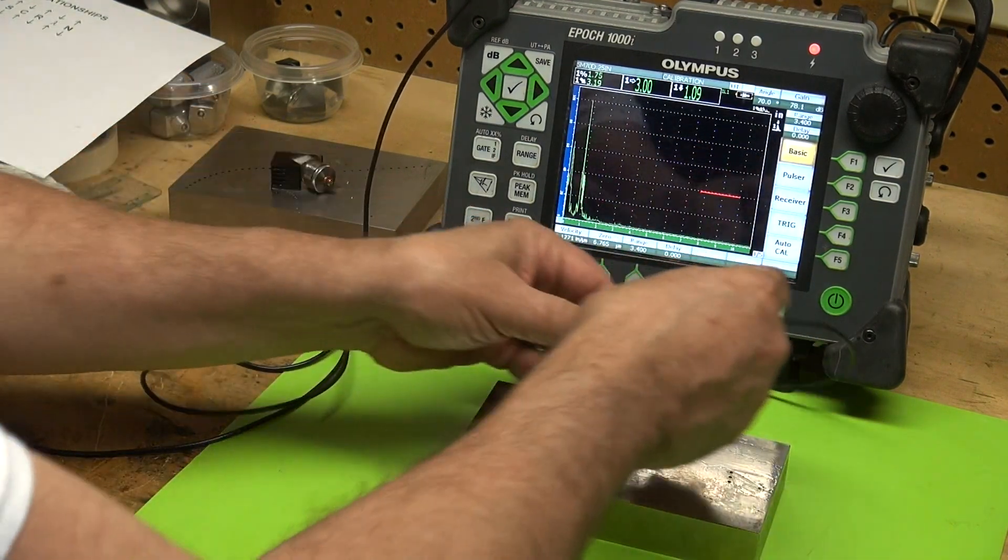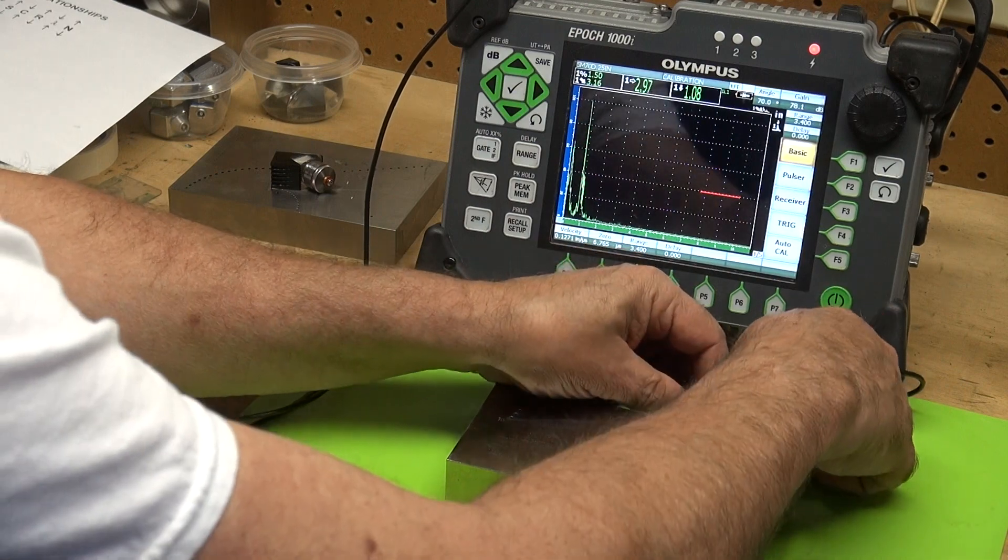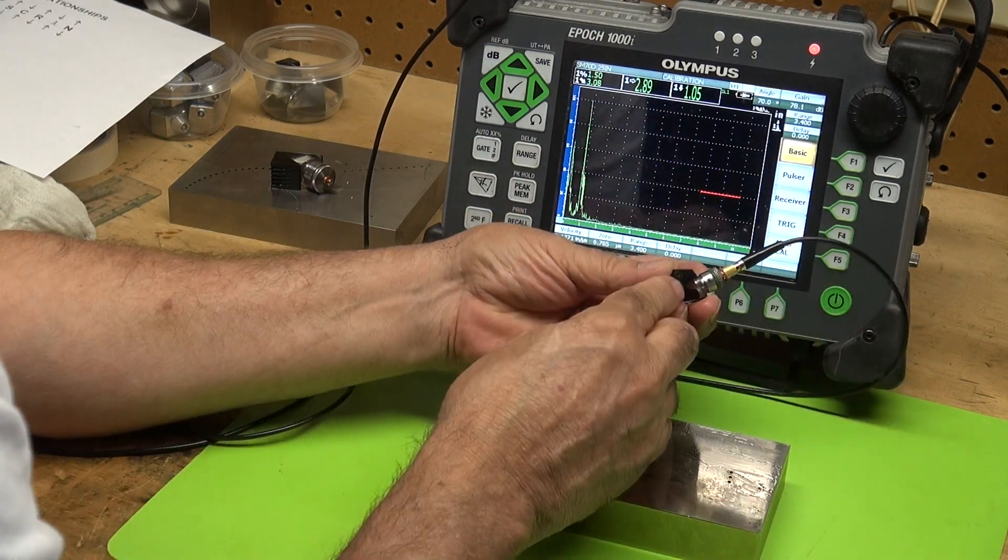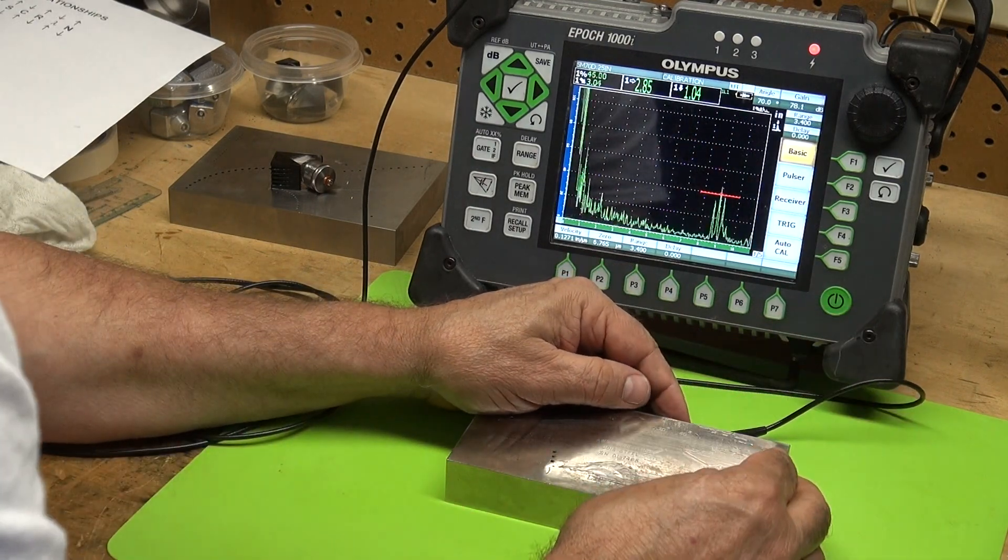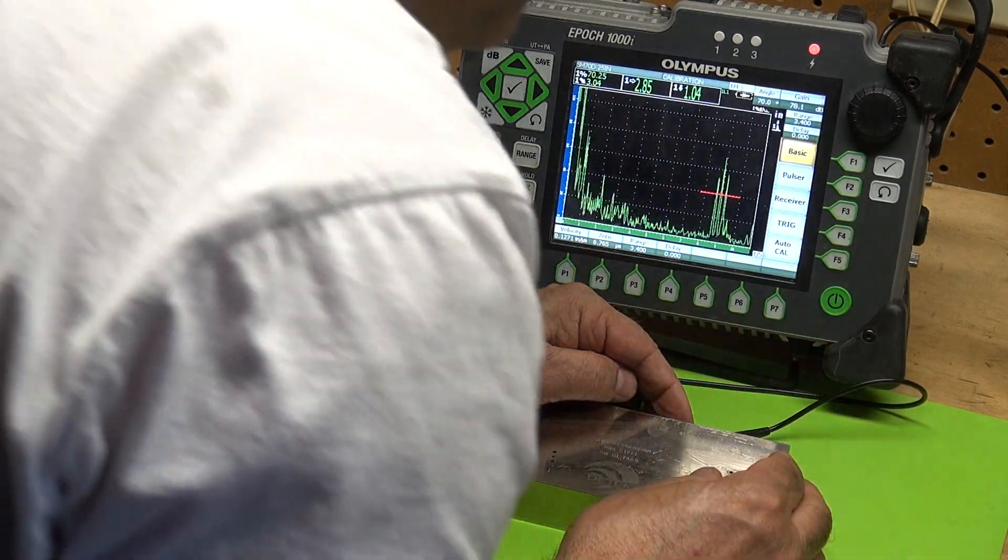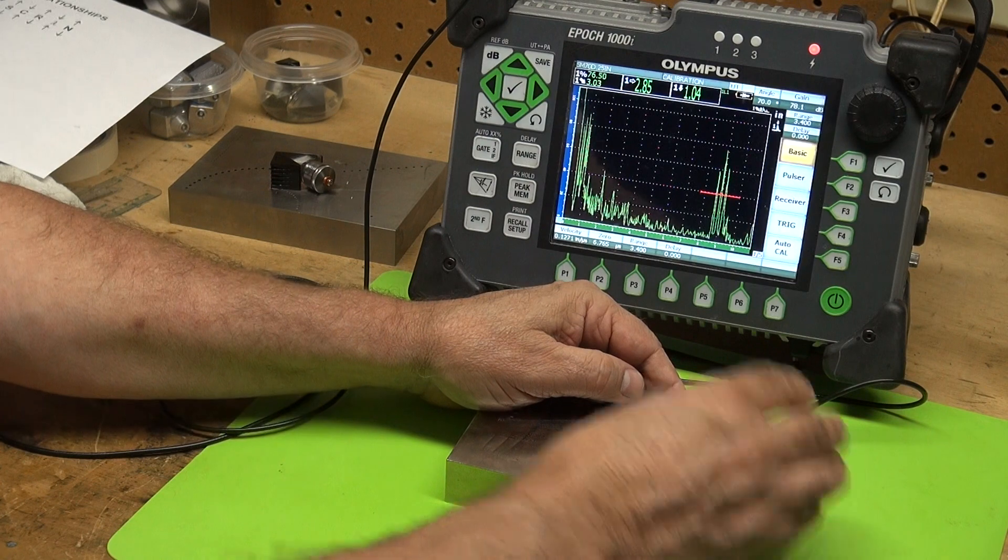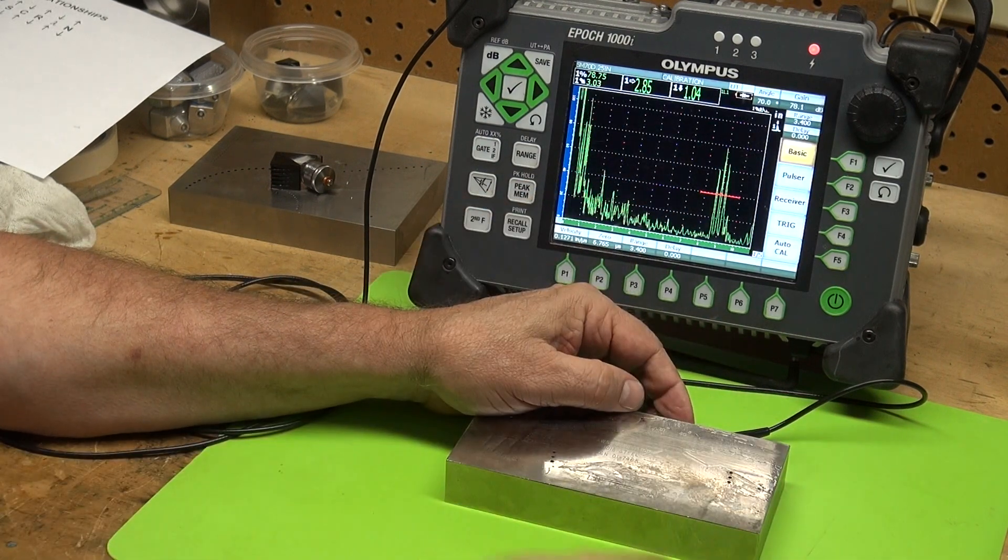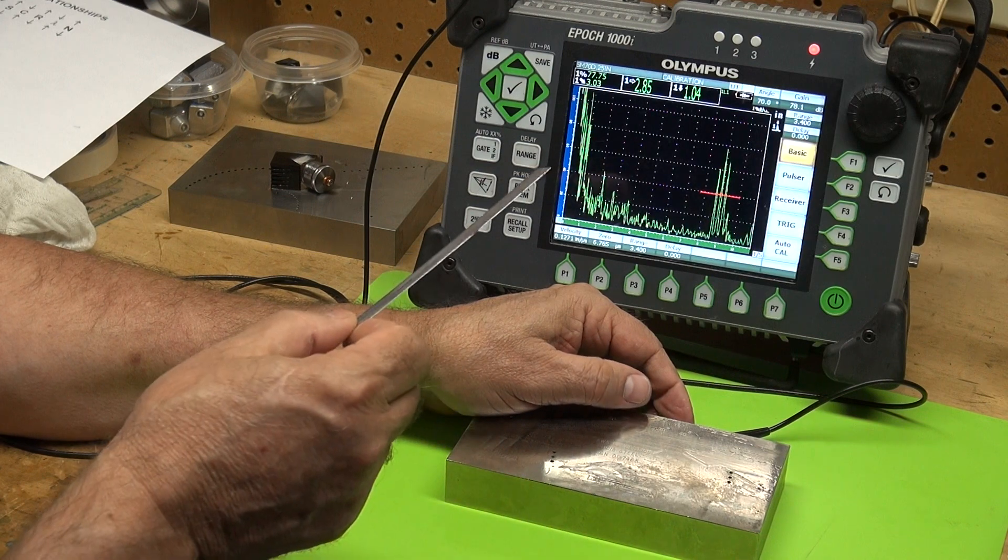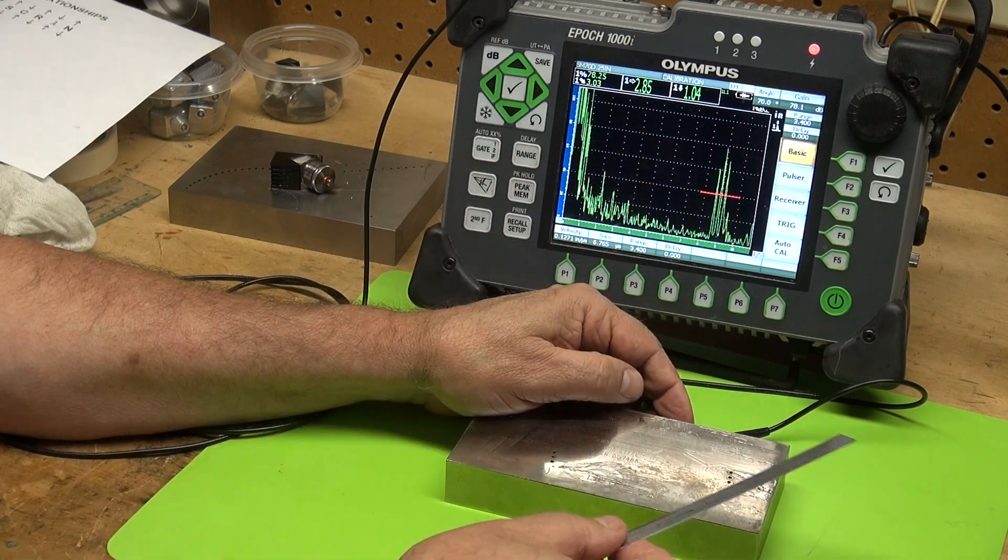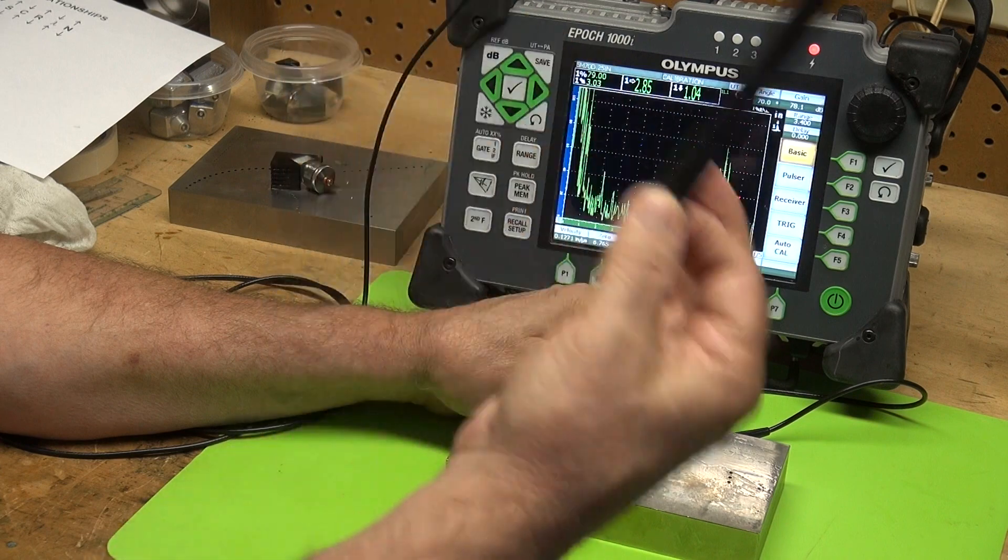Now the difference is now I have a five megahertz transducer. And here's my beam index point. Here's my 70 degree. Let me put it on this 70 degree. My beam index point. Look how crisp that is. Higher frequency, that is. Higher frequency, better resolution. You can clearly see those three holes versus the one and a half megahertz.